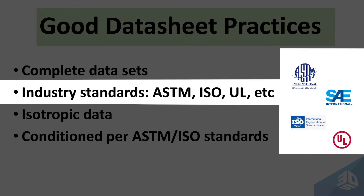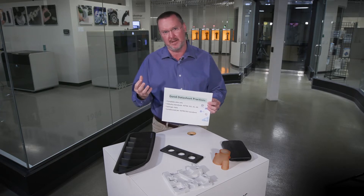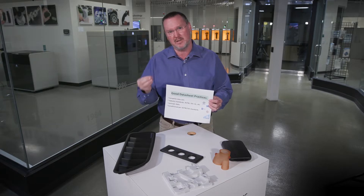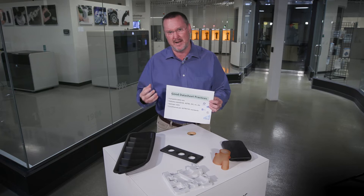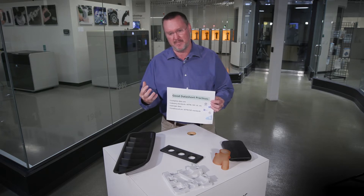When you have that data in your data sheet, you want industry standard data. One thing that's really helpful is understanding isotropic data. Isotropic data is really helpful in the additive manufacturing industry because of all the different ways that we build in this technology. If you have isotropic data, you can take advantage of how you set up parts and take full advantage of that technology and material.